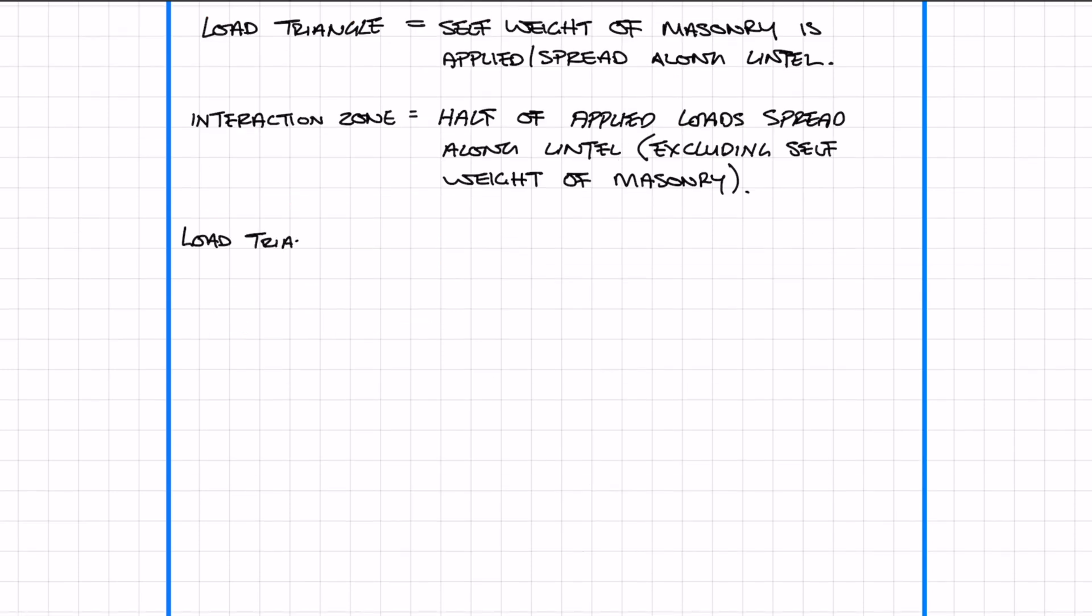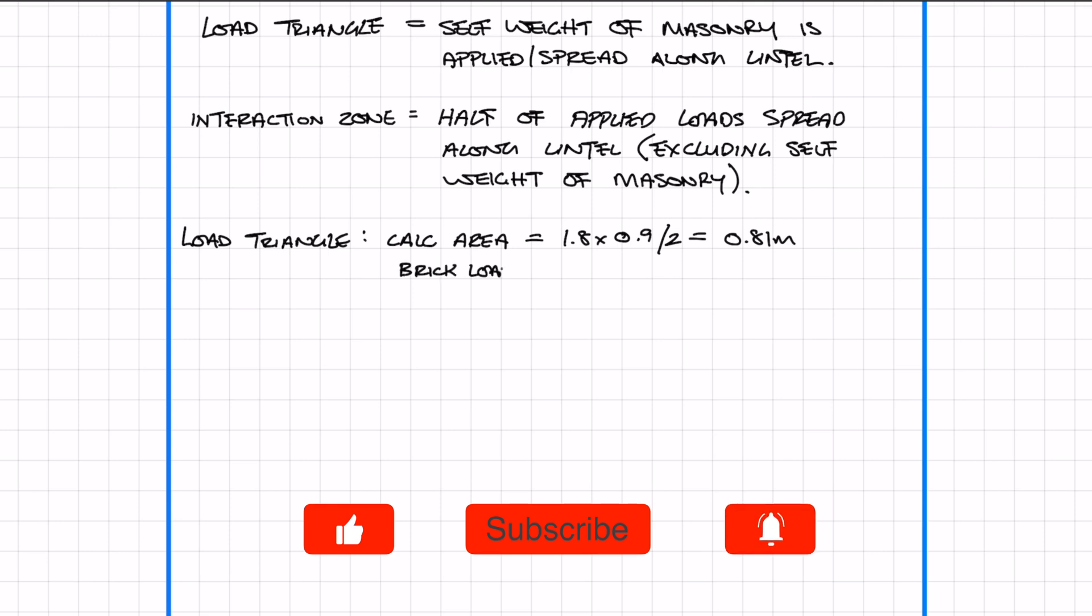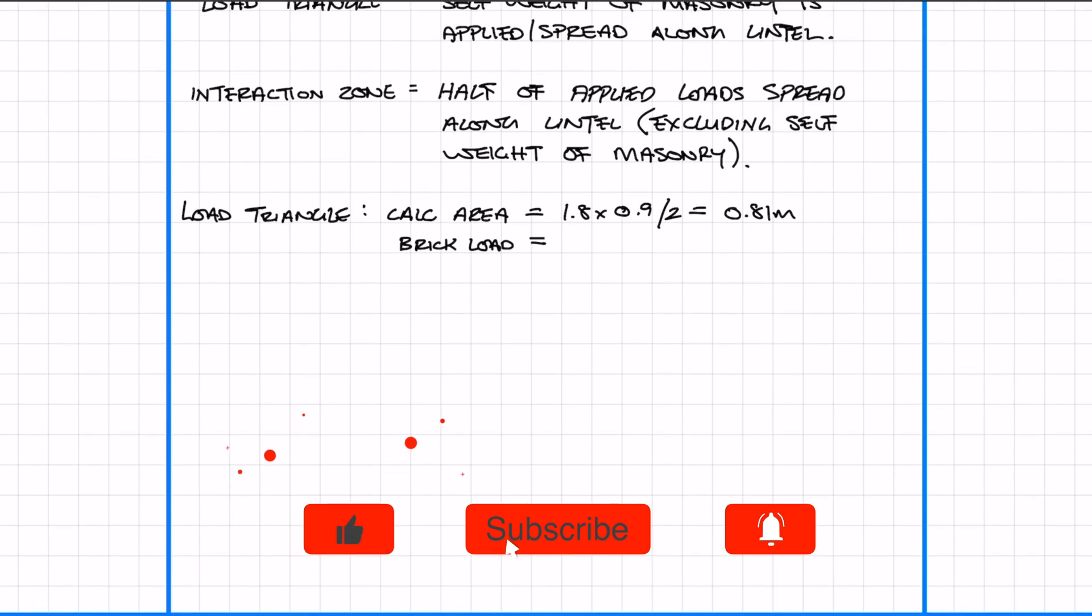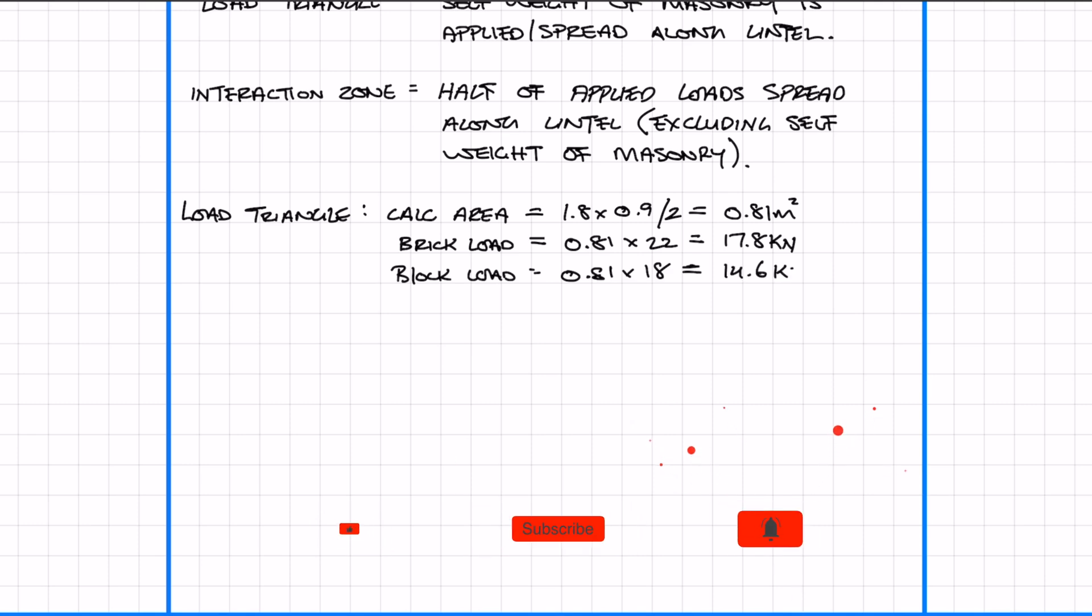So first in the loaded triangle let's calculate the area of a triangle which comes to 0.81 meter squared. Then we calculate the brick and the block load by simply multiplying the area by the appropriate density. Add the loads together and then spread by the lintel length.